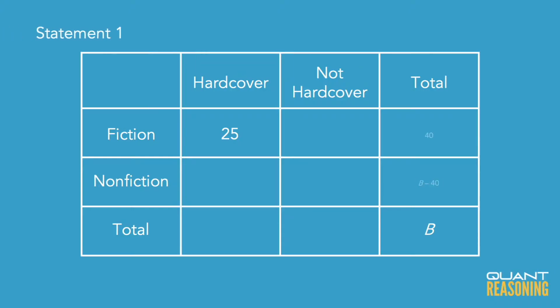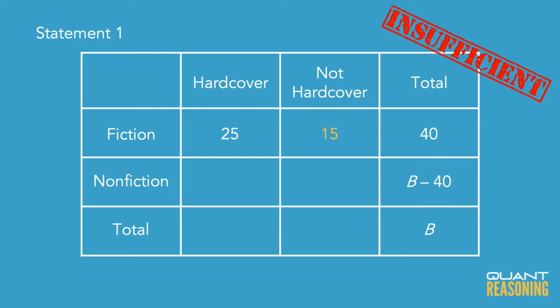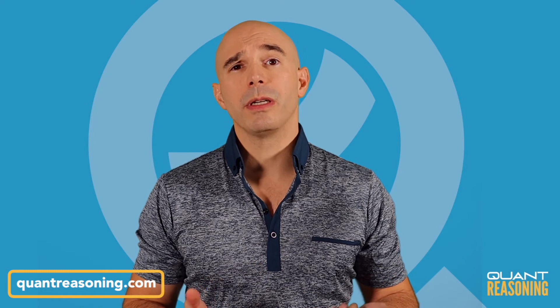Statement one gives us the total number of fiction books — it's 40. Can I find the value of B from that? No. The only thing I can infer is the number of books that are fiction but not hardcover, which is the difference between 25 and 40, so there are 15 of that type. But that's not going to help me find the total number of books. So statement one is not sufficient on its own, and we can eliminate A and D.